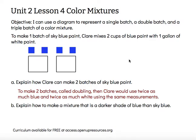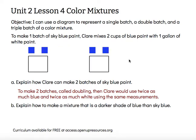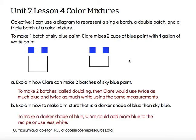Letter B, explain how to make a mixture that is a darker shade of blue than sky blue. Well, if I want a darker shade of blue, I could start with the original recipe and either add a little bit more blue, or if I was limited on how much blue I had and still wanted it darker, I could just use less white. Both of those would give me a shade of sky blue that is darker, because there's more blue by comparison to the amount of white in the recipe. So to make a darker shade of blue, Claire could add more blue to the recipe or use less white.